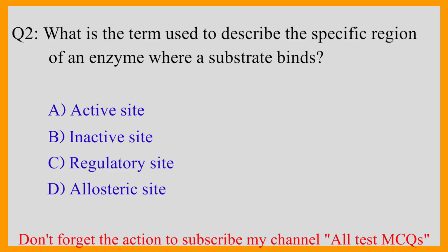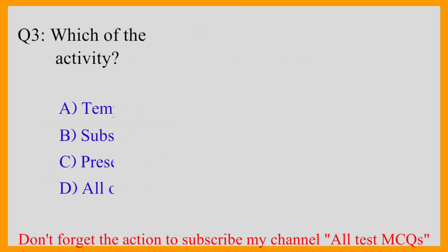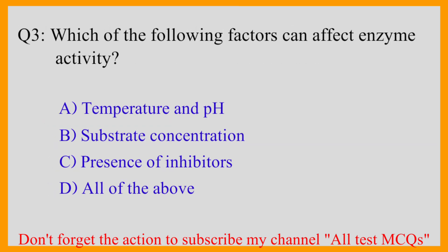...where a substrate binds? The correct answer is option A — active site. Question number three: Which of the following factors can affect enzyme activity? The correct answer is option D — all of the above.